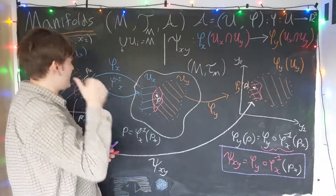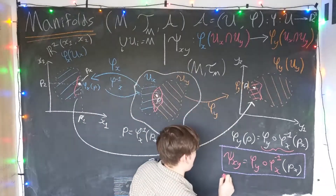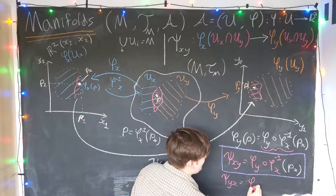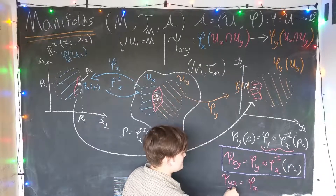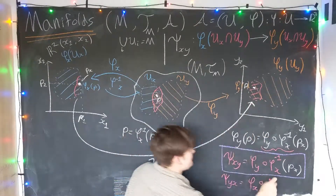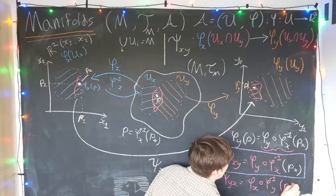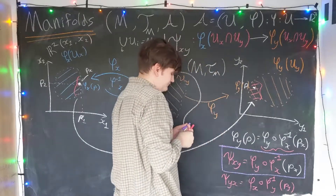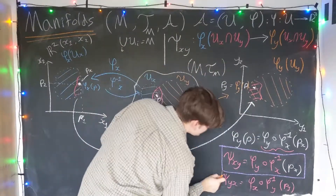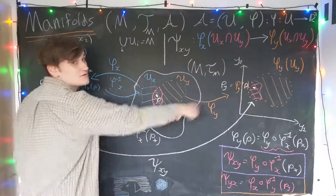Running this argument in reverse, starting with a point pY in the Y chart, you can convince yourself that the transition function to go from Y to X is φX composed with φY⁻¹, evaluated at pY. The chart map you want to apply last is X, since you're going into X coordinates. So these are our two expressions for transition functions between any two chart maps.